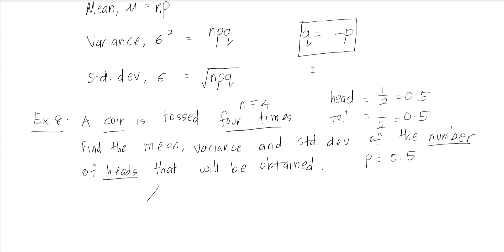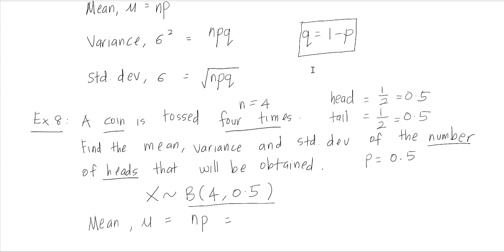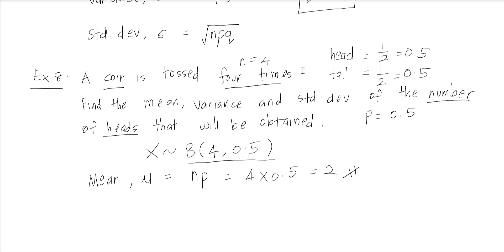We let p, the probability of success, equal the probability of getting a head, which is 0.5. It is given that the coin is tossed four times, so n equals 4. We can use the binomial distribution because we have the number of trials, which is 4, and the probability of success, 0.5. The mean is mu equals n times p: 4 times 0.5 equals 2.